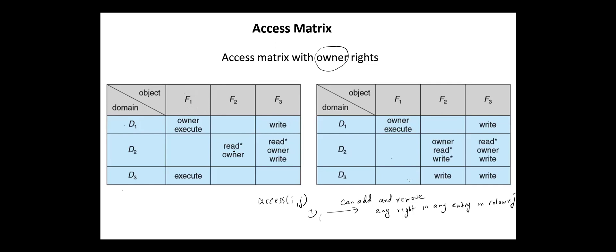In the same manner, domain 2 is the owner of file F2. So it can add and remove any rights for file F2. For example, right operation is added for this file in domain D3.